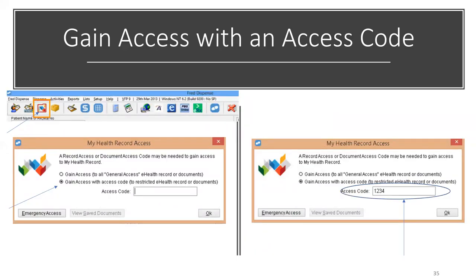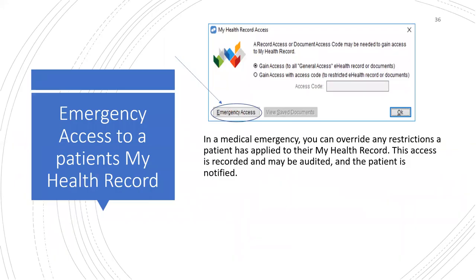We will now demonstrate how to gain access to a patient's My Health record that has an applied restriction. Select the My Health record icon and the authentication required window will display. Enter your pharmacist initials and password and then select OK. The My Health record access window will then be displayed. FRED Dispense automatically selects the appropriate access option. Since your patient has restricted access to their record, you will need to select the option gain access with access code, and ask the patient for their PIN or password to enter and then select OK. In this case, the code is 1234. In the case of an emergency, you may override any access controls by pressing the emergency access button.